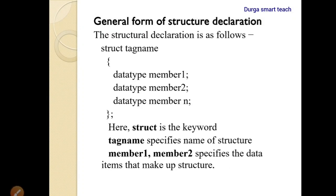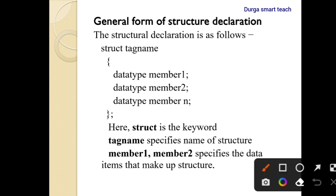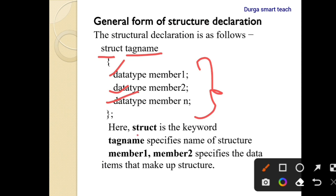Hello students, welcome to my channel. Today I am going to discuss about array of structures in C. The general form of structure declaration: 'struct' is a keyword used to represent a structure, the tag name represents the name of the structure, and these are the members of the structure. Member one, member two, member N — you can declare as many members as needed.